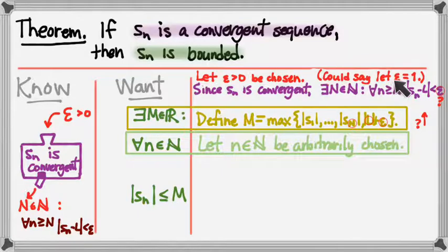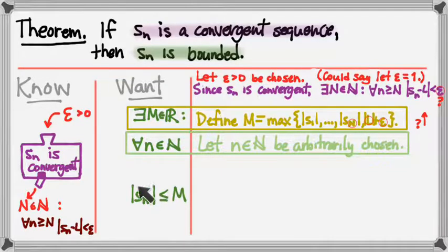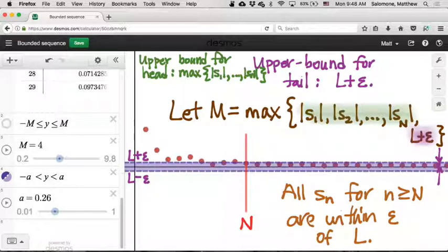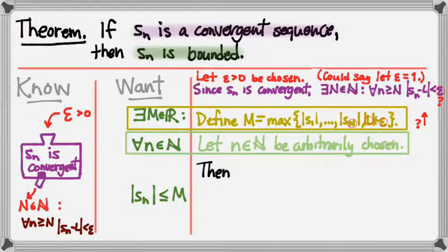At this point in the proof, we've introduced the reader to epsilon, used the definition of convergence to introduce N, and L is the limit of the sequence — also part of the convergence definition. So all terms are defined before we use them in the definition of M. Now we finish the argument: for any arbitrarily chosen natural number n — chosen by the universe — why is |Sn| ≤ M? The answer is different depending on whether n indexes a head term or a tail term, so we take a two-case approach.